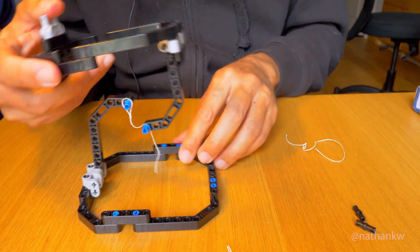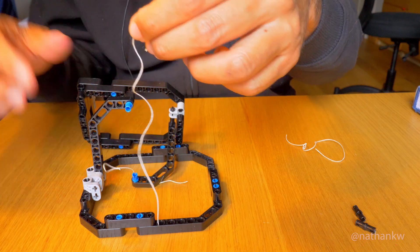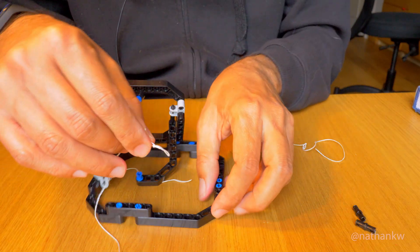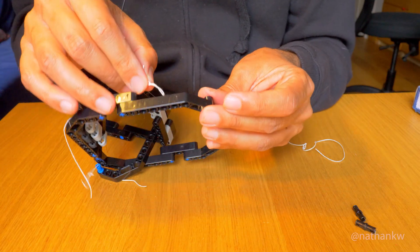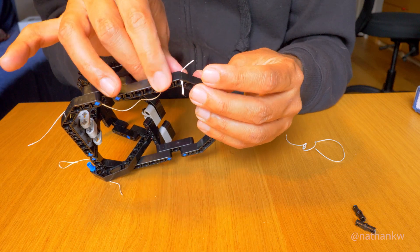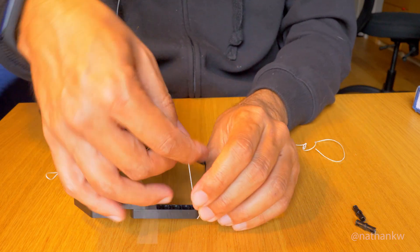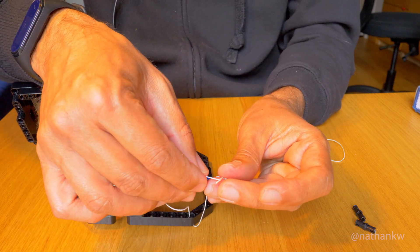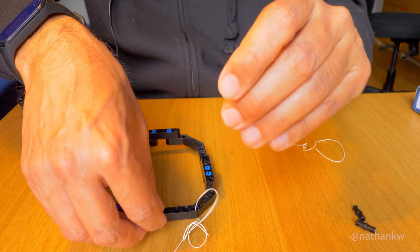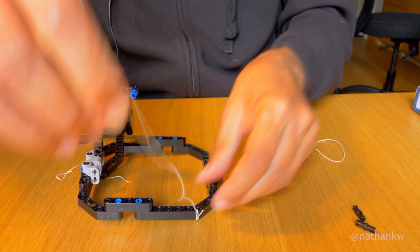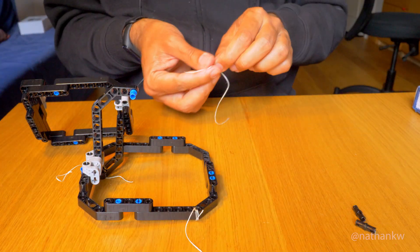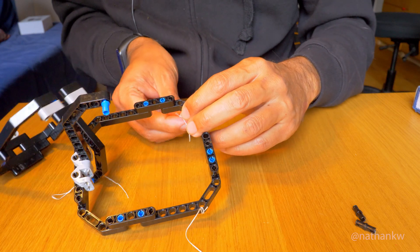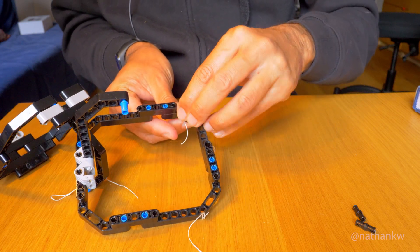So that's where the other two strings come in. Again, I've tied a little loop just to make it easy, and I'm going to feed it through. They're going to be supported by these, on these corners, the little 45-degree corners here. So that's one, the other one through like this.